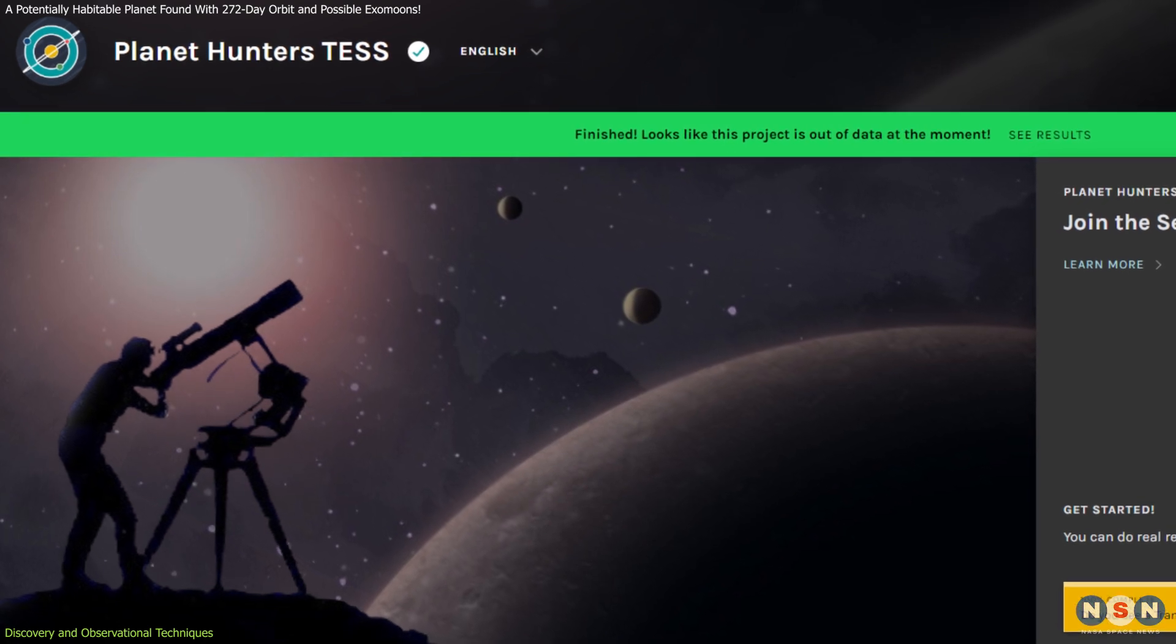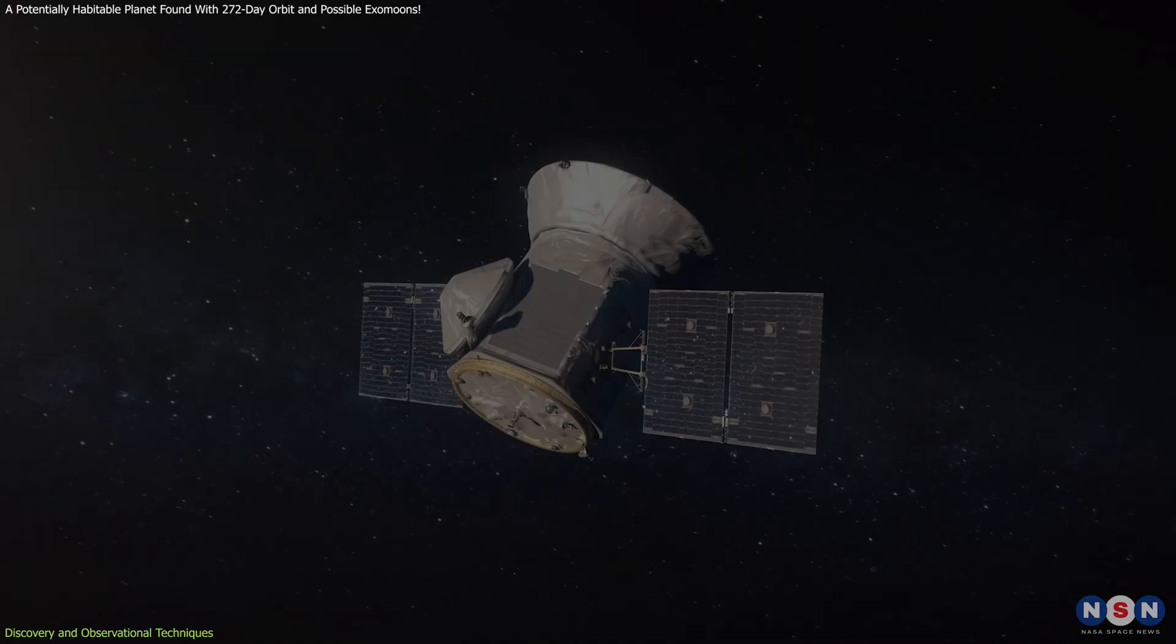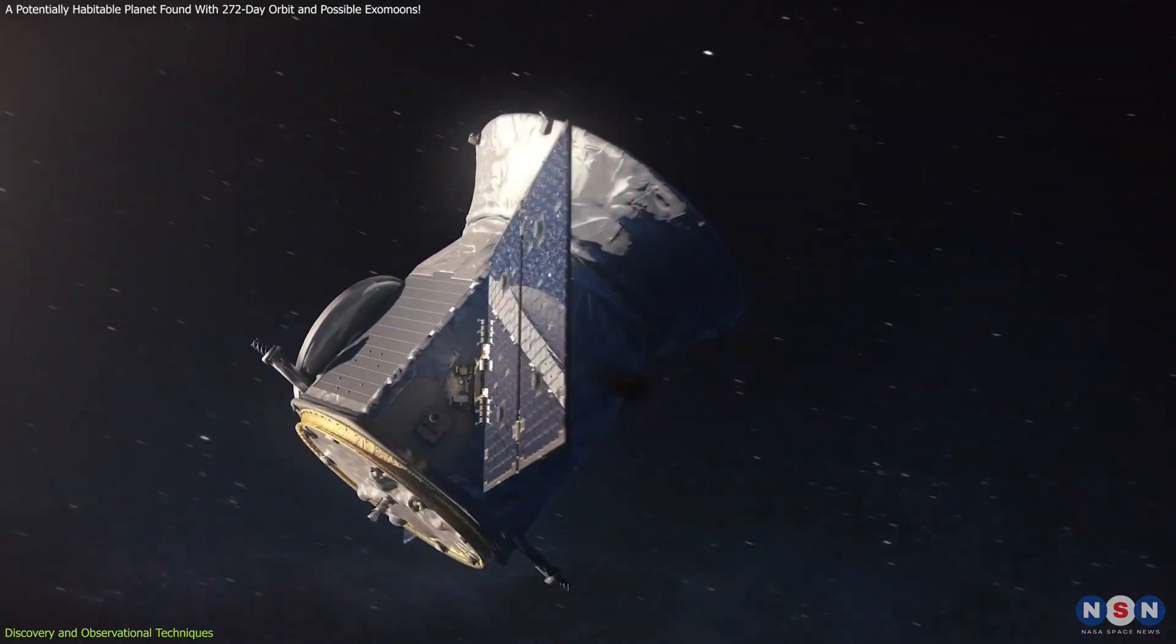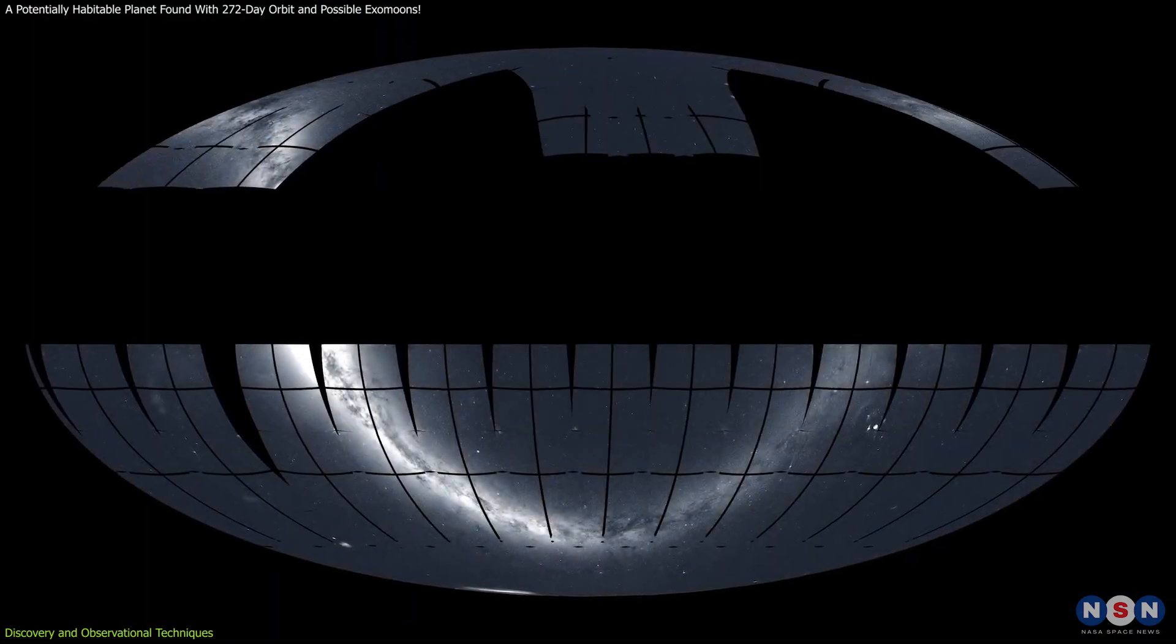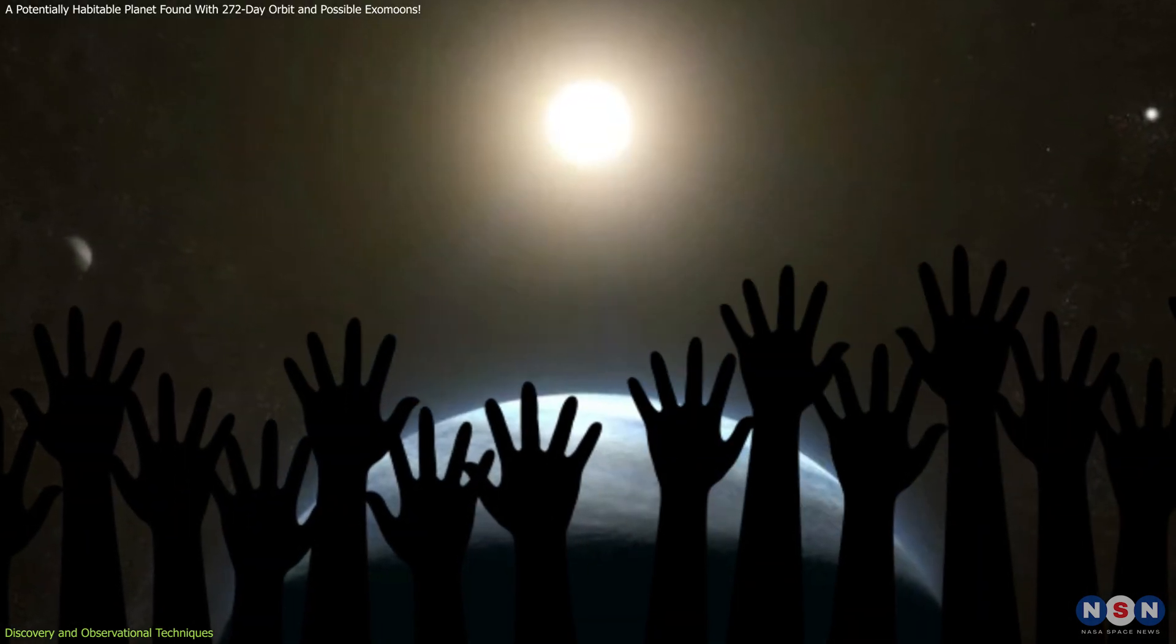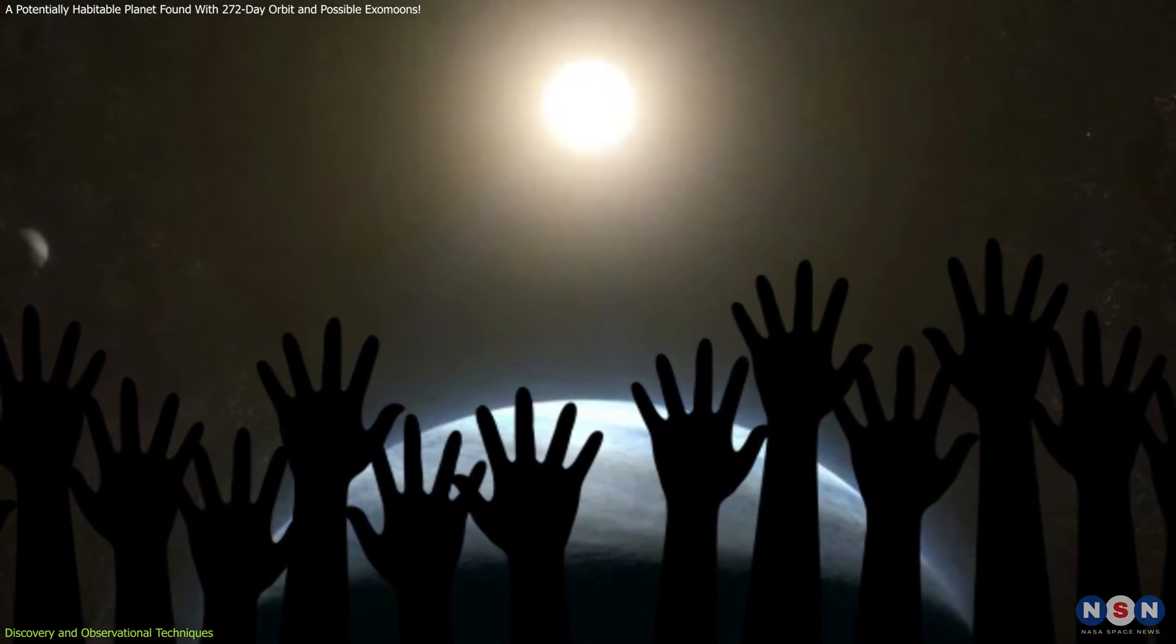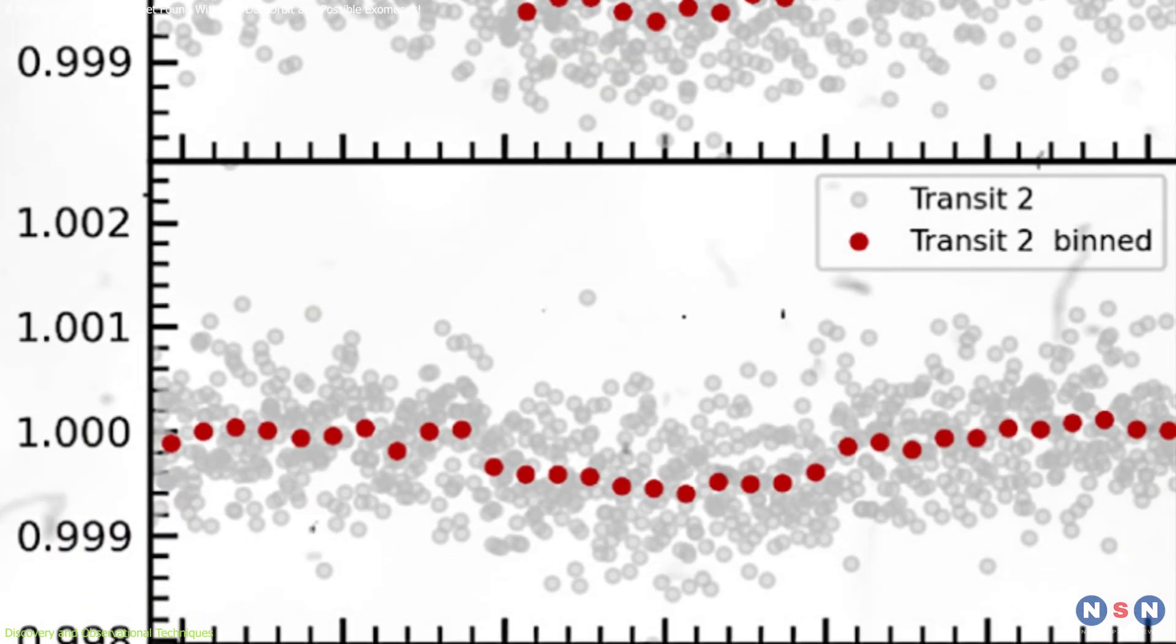Citizen scientists played a pivotal role in this discovery through the Planet Hunters TESS Program. This program utilizes data from NASA's Transiting Exoplanet Survey Satellite, which continuously monitors thousands of stars for signs of transiting planets. Volunteers from around the world meticulously analyze this data, identifying potential transits that automated systems might miss.